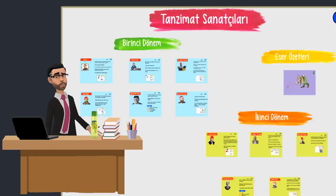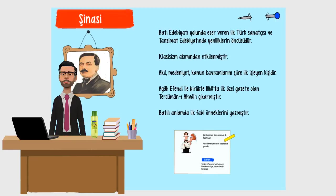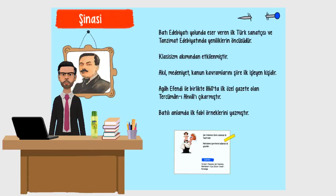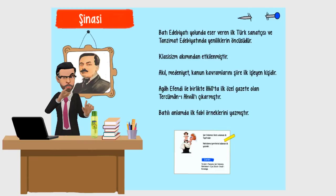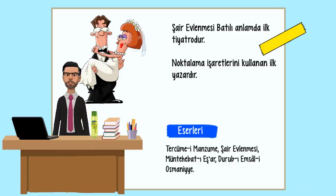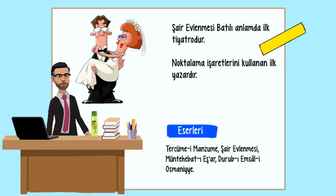Şimdi ise Tanzimat dönemi birinci ve ikinci dönem sanatçılarını tanıyalım. İlk olarak birinci dönem Tanzimat sanatçılarına bakıyoruz: Şinasi. Batı edebiyatı yolunda eser veren ilk Türk sanatçısı ve Tanzimat edebiyatında yeniliklerin öncüsüdür. Klasizm akımından etkilenmiştir. Akıl, medeniyet, kanun kavramlarını şiire ilk işleyen kişidir. Agah Efendi ile birlikte 1860'da ilk özel gazete olan Tercüman-ı Ahval'i çıkarmıştır. Batılı anlamda ilk fabl örneklerini yazmıştır. Şair Evlenmesi, Batılı anlamda ilk tiyatrodur. Noktalama işaretlerini kullanan ilk yazardır.